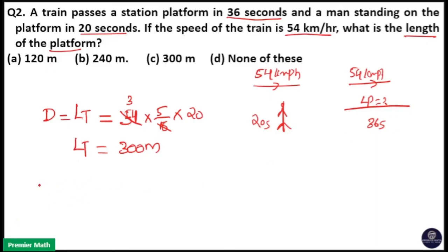In the second case, distance covered is equal to length of the train 300 meters plus length of the platform. That is equal to speed into time. Speed is equal to 54, I will convert it to meters per second into time 36 seconds.